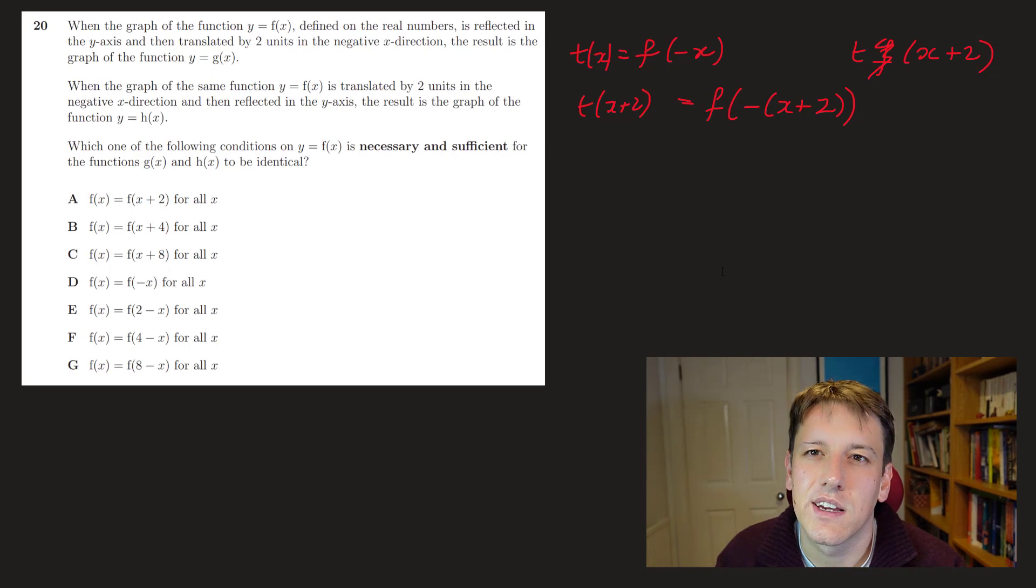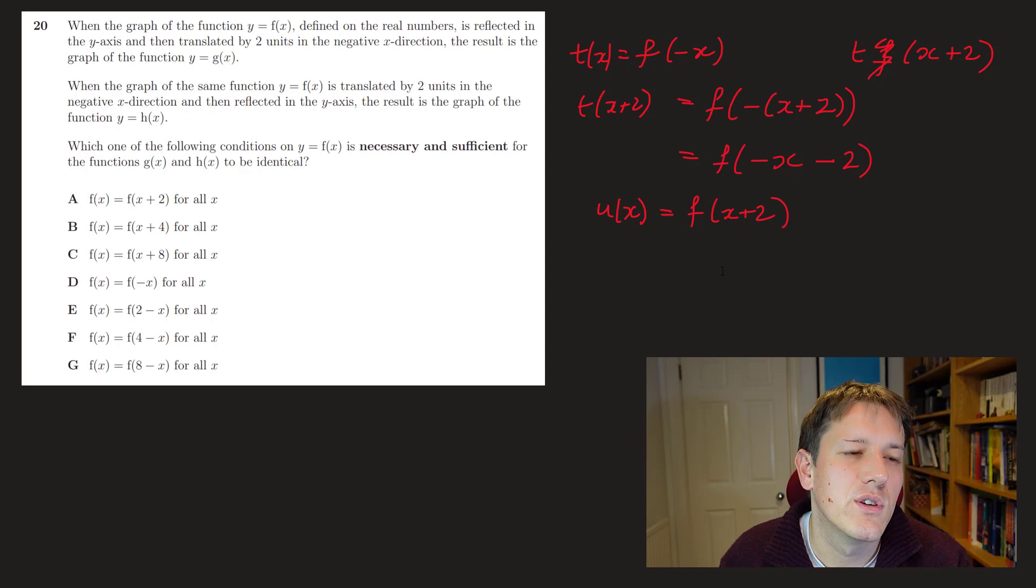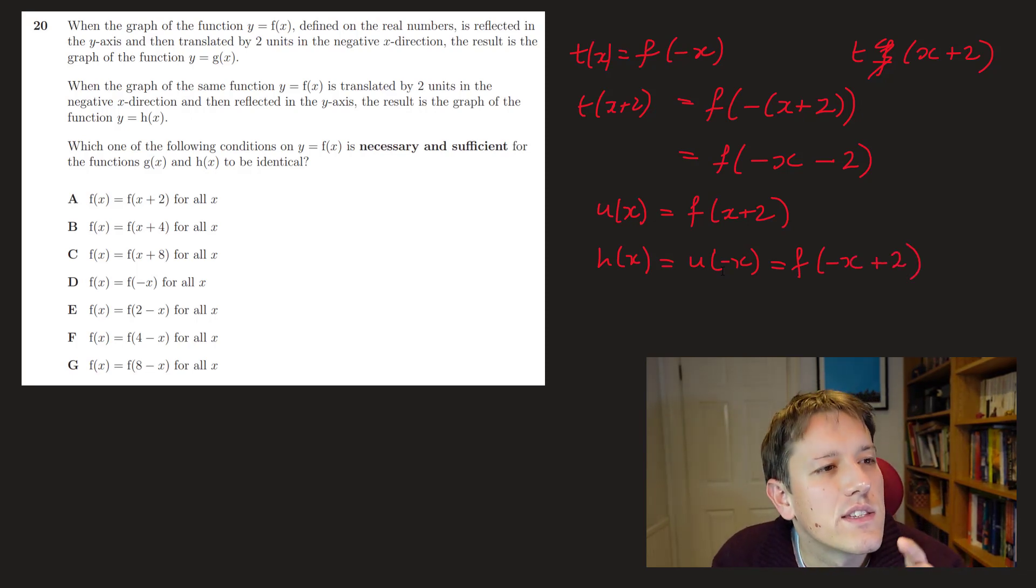Which is a lot clearer when you introduce this intermediate function t, these aren't really asked in single math A level anymore, so people are not as comfortable with these, but anyway, overall here we get f of minus x minus 2, so similarly it says when we translate by 2 units in the negative x direction, and then reflect in the y-axis, we get the graph y equals h of x. So let's say, let's just make u of x the intermediate function here, so you go 2 units in the negative x direction, so that's f of x plus 2, and then my function h of x is going to be reflected, reflection of u in the y-axis, so it's u of minus x, so I get of f of minus x plus 2 here.